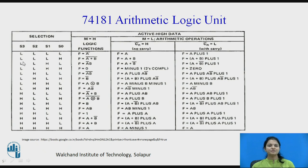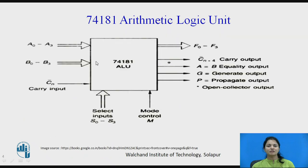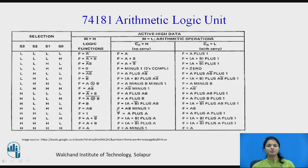The selection modes are S3, S2, S1, S0, giving 16 possible inputs. The mode control determines the type of output: when mode is high, we get logic functions; when mode is low, we get arithmetic functions.